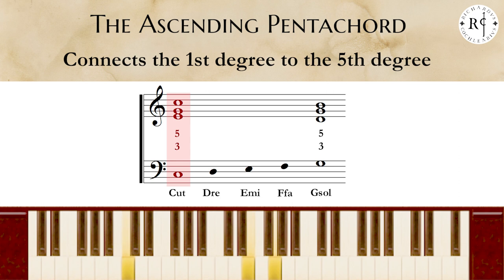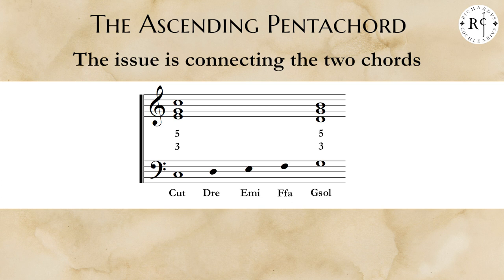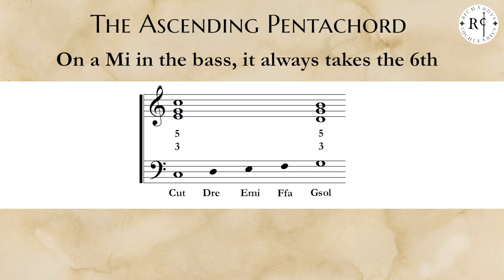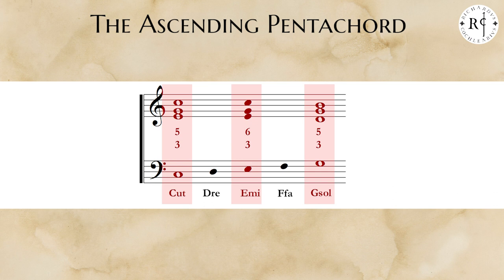The ascending pentachord connects the first degree to the fifth one, from C to G Sol. On C and G Sol, we have a third and fifth chord. The issue is connecting these two chords. Following the rule common to all baroque theorists — that on E Mi in the bass it always takes the sixth — we must put a third and sixth chord on E Mi. We then connect these three chords with the third, fourth and sixth chord on D Re, and with the fifth and sixth chord on F Fa. Using these chords, all voices move to their nearest note, creating good harmony and good voice leading.